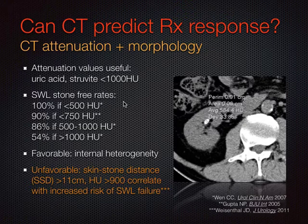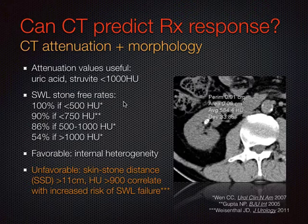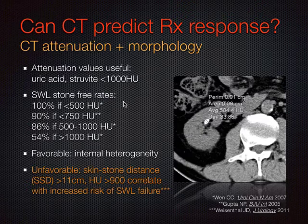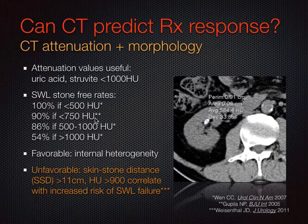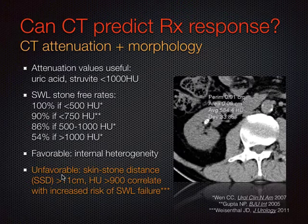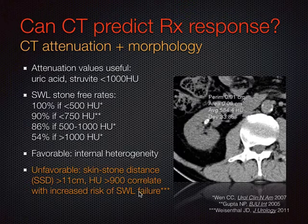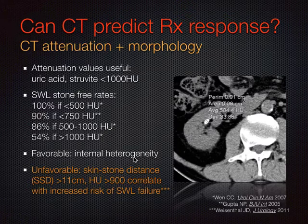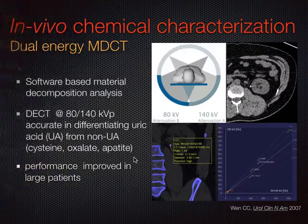CT parameters that may be useful to urologists for predicting treatment outcome: there are three that are useful—attenuation value, skin-to-stone distance, and internal heterogeneity within the calculus on bone window. The higher the attenuation value of the stone, the more difficult it is to fragment. Stones with a long skin-to-stone distance are harder to treat. When you have a combination of long skin-to-stone distance and high attenuation value, there's increased risk of shockwave lithotripsy failure. When the stone is lower attenuation and internally heterogeneous, those are favorable predictors. If this information is important to you and you're not getting it, ask your radiologist.